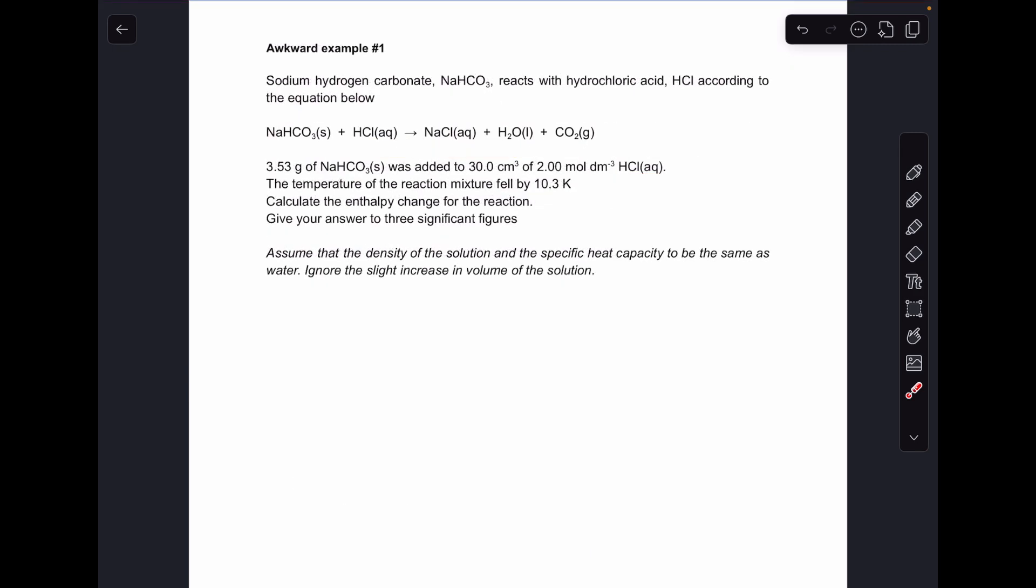So moving on to the first of the two awkward examples, very similar to the previous one. We've got two chemicals reacting together and the temperature change has been measured. But you'll notice in this one there's no mention of the word excess. So we're given the mass of sodium hydrogen carbonate and the volume and concentration of the hydrochloric acid. So the first thing we need to do is work out how many moles of each chemical and then we can establish the excess reagent.